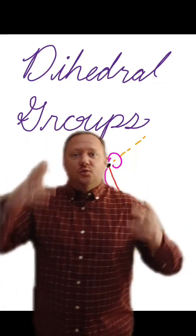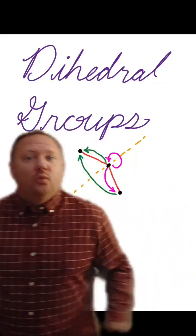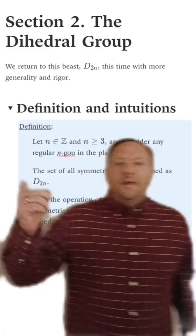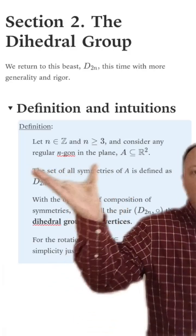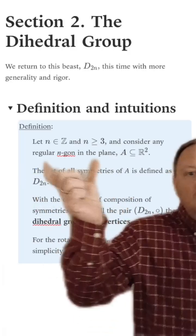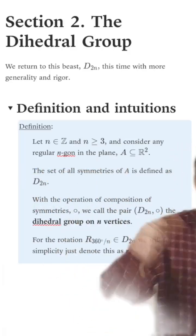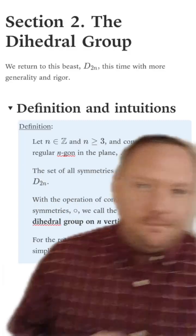Let's get back to talking about dihedral groups, but this time with more rigor and more generality. Let n be any integer greater than or equal to 3, and consider a regular n-gon, which we'll call A, in the two-dimensional plane.